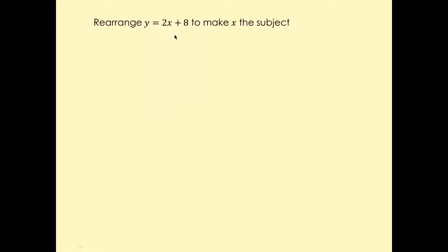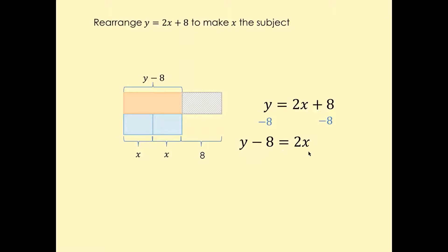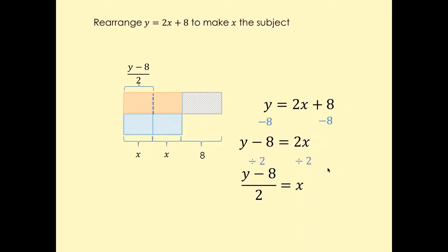So: y equals 2x plus 8, and we want to make x the subject. First, move plus 8 to the other side — so minus 8 on both sides. Plus 8 and minus 8are going to cancel, and you're left with y minus 8 equals 2x. Then we want to move 2 to the other side, so divide by 2 on both sides. And you're left with x equals y minus 8 over 2.